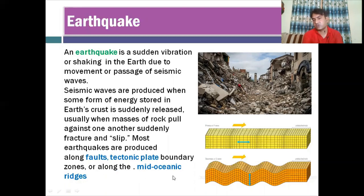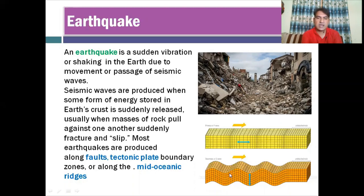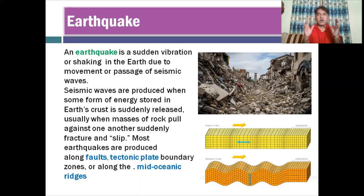Most earthquakes are produced along faults, tectonic plate boundary zones, or along the mid-oceanic ridge. You can see here — this is the surface of Earth, and once the trembling or shaking starts, once the plates start to move and generate seismic waves, the surface takes this shape and starts to tremble. Mostly earthquakes originate where there is a weak line, a fault line, or at the corner where the plates meet.